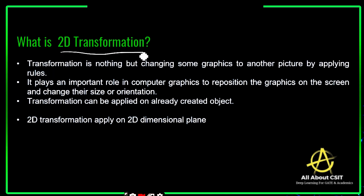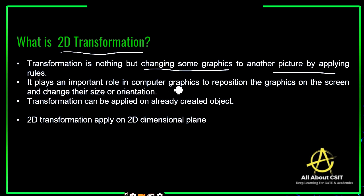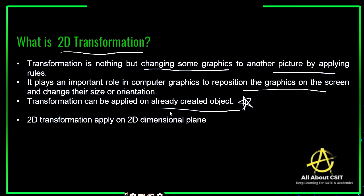So what is 2D transformation? Transformation is nothing but changing some graphics to another picture, trying to change one object to another object by simply applying the rules. You can't simply change the object — you need to apply some rules on that object, so then only the picture will get good clarity. Suppose you take your mobile phone and capture a picture; you apply filters on that picture so the picture can be viewed in different variations. It plays an important role in computer graphics to reposition graphics on the screen and change their size and orientation.